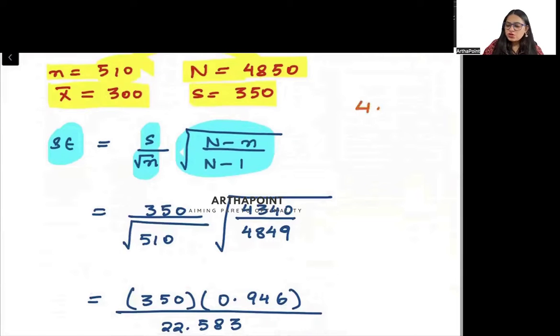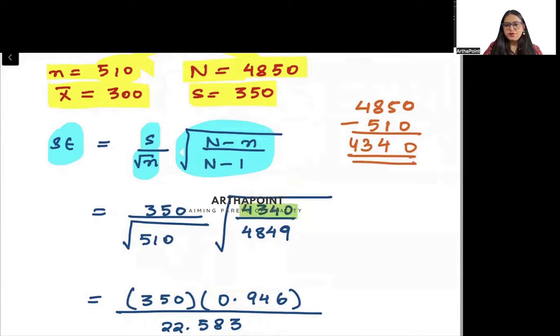So 4850 minus 510, it goes ahead and gives 4340. So here in the numerator, I will have 4340, and in the denominator, I will be having 4849.